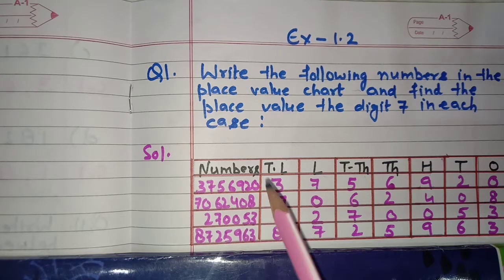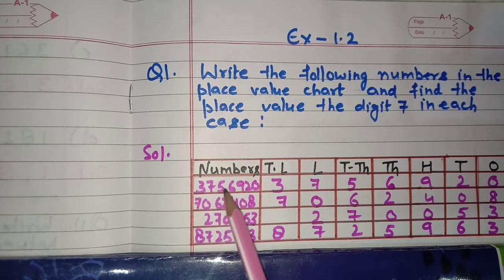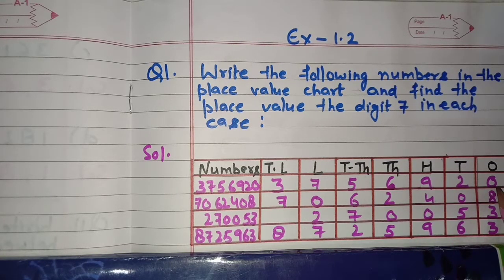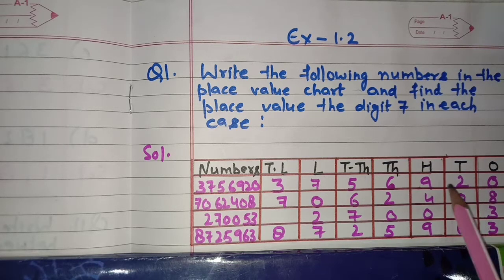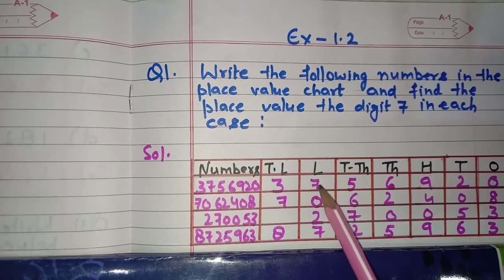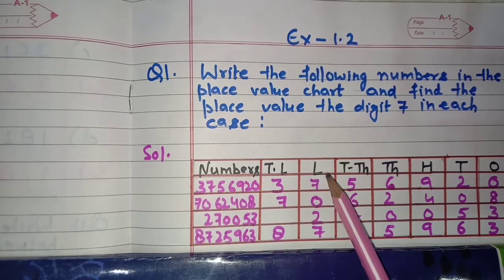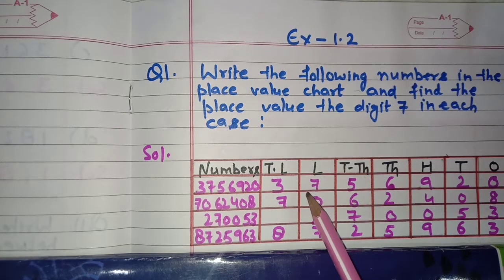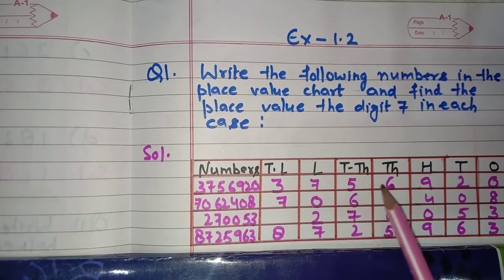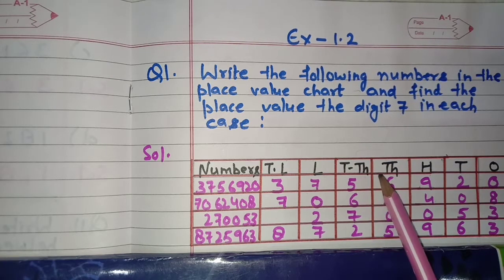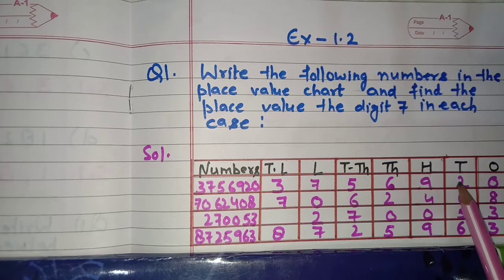The first number is 3,756,920. We write it starting from the ones place: 0, 2, 9, 6, 5, 7, 3. So three is at the Ten Lakhs place and seven is at the Lakhs place. The number reads: thirty-seven lakh, fifty-six thousand, nine hundred and twenty.